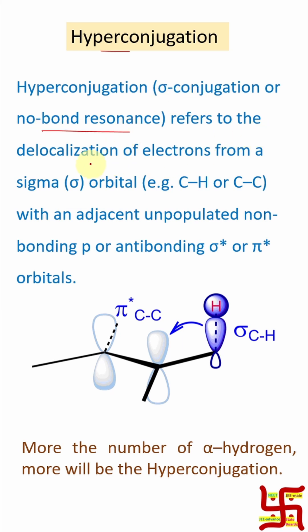It indicates the delocalization of electron from sigma orbital or sigma bond, that is from C-H or C-C, with an adjacent unpopulated non-bonding p orbital or anti-bonding pi star orbital.